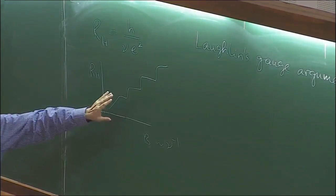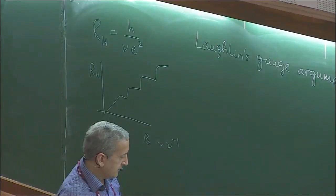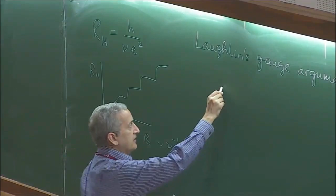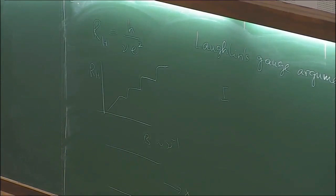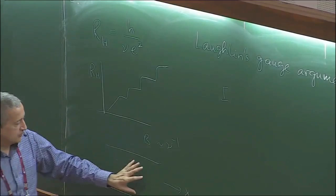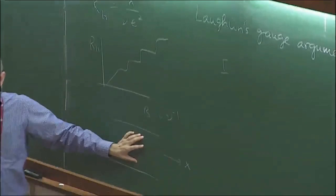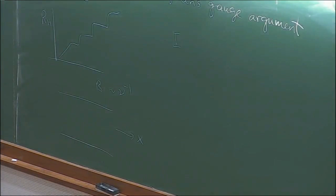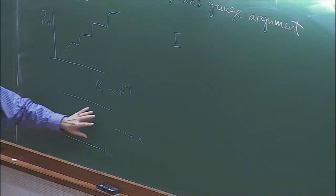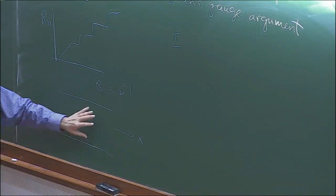As we change the filling factor we are changing the Hamiltonian, but the Hall resistance does not change — so you can see that it is a topological object. We are going to do the following: consider a sample with the x-direction, and do a two-step calculation. The first step is to do the calculation for a system precisely at an integer filling and obtain the known result.